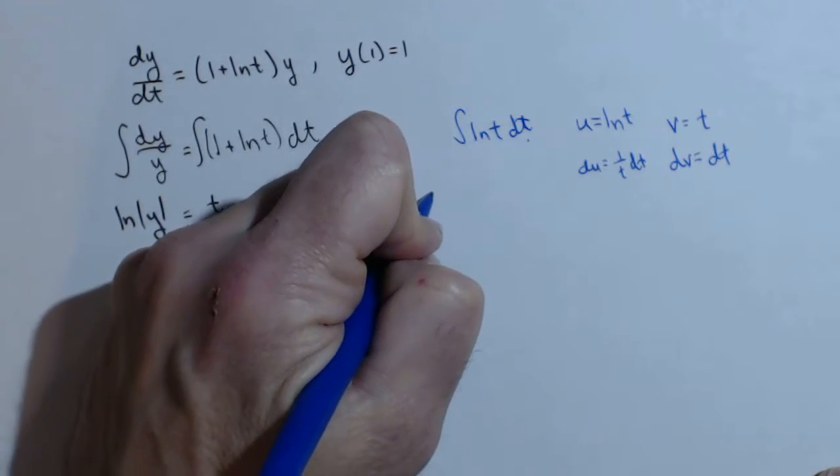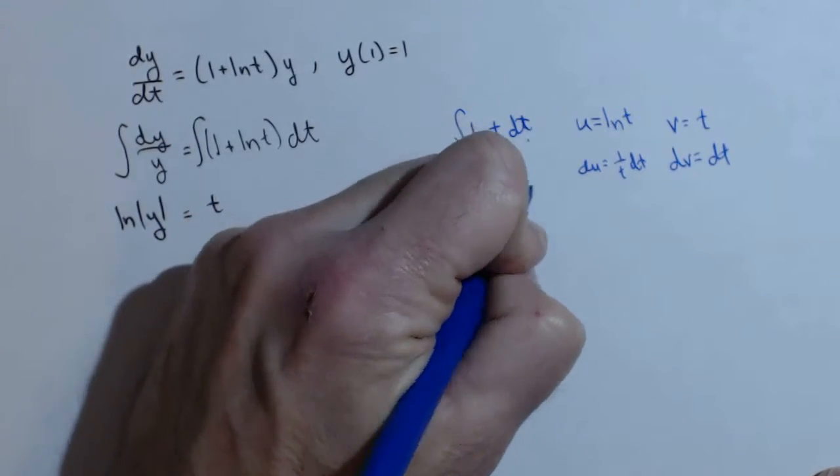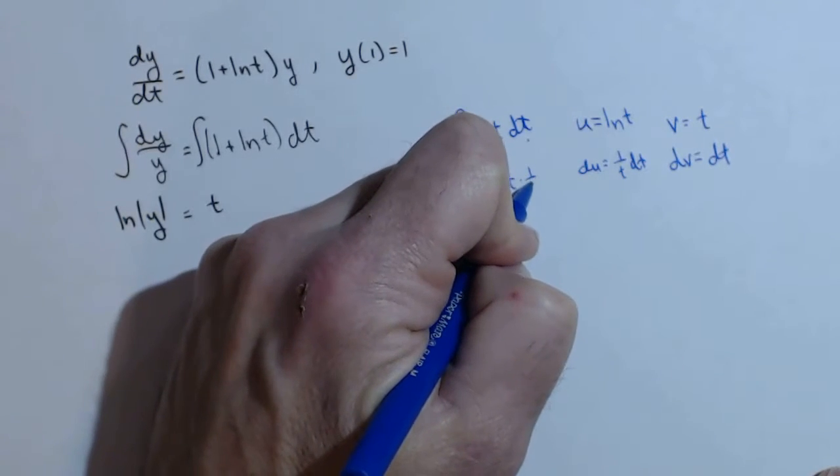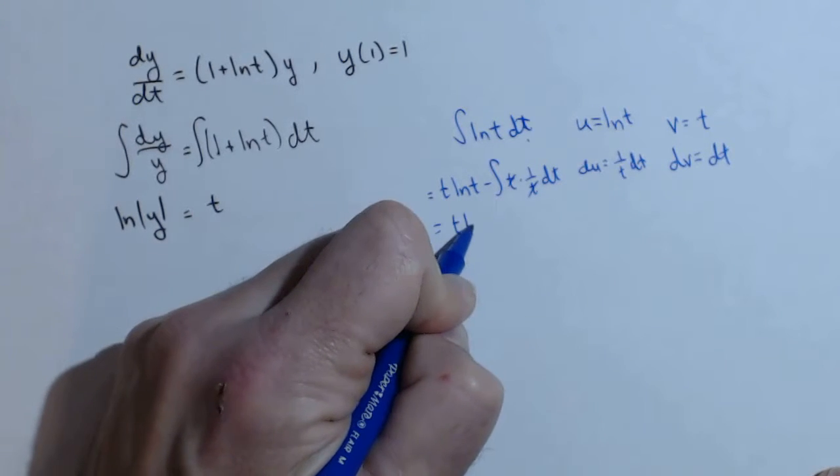So putting that back together, we have t ln of t minus the integral of vdu. So t times 1 over t dt. Those cancel. Antiderivative of 1 is t.